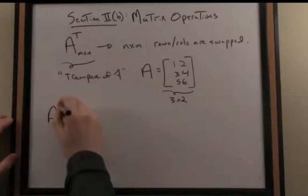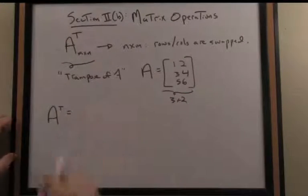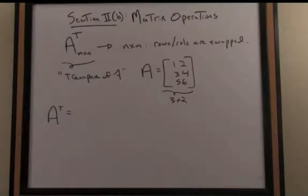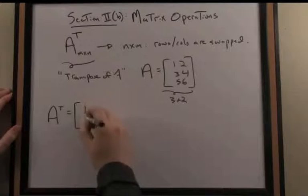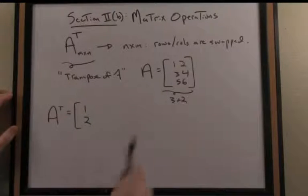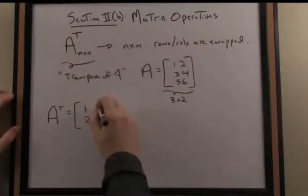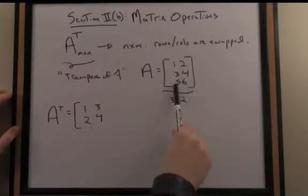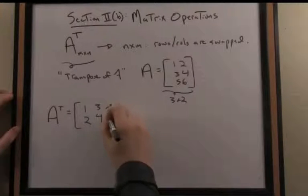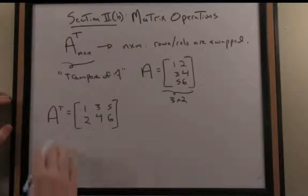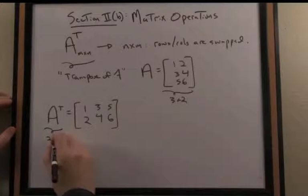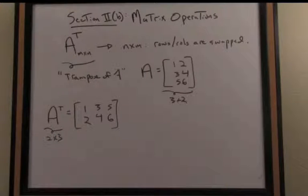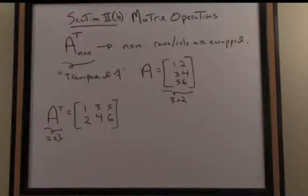Taking the transpose of that matrix, I switch the rows and columns. Row 1 becomes column 1, so I'd write 1, 2 in the transpose. Row 2 becomes column 2, and row 3 becomes column 3. Notice the dimensions swap: the transpose of a 3 by 2 matrix gives us a 2 by 3 matrix.